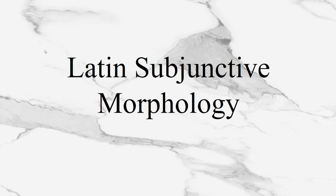Salve te omnes. This is a short lesson on the morphology of the Latin subjunctive. There are four tenses of the subjunctive mood in Latin: the present tense, the imperfect tense, the perfect tense, and the pluperfect tense. There is no future or future perfect subjunctive in Latin.